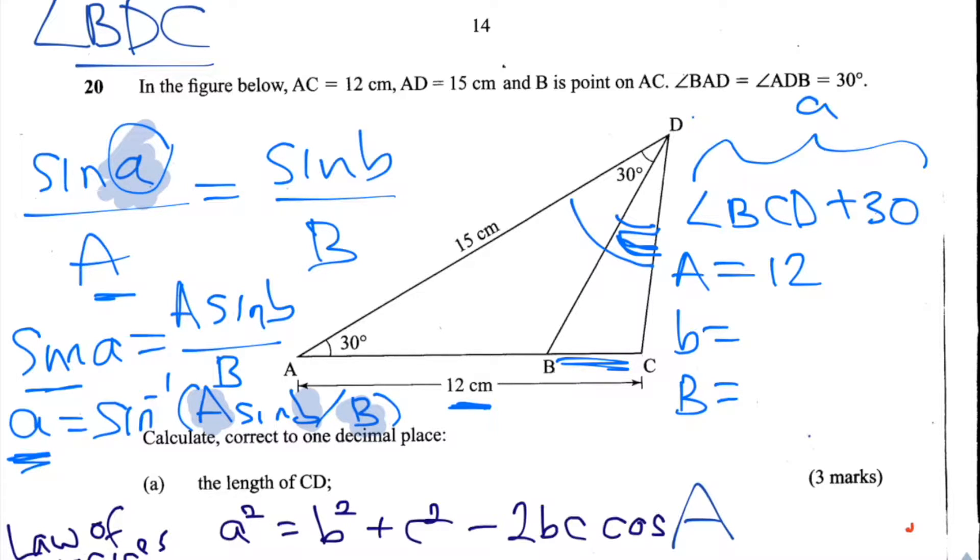Now we just need to find values for little b and big B. So which angle could we use? Well, we know this angle here, CAD. So we could definitely use CAD as our small b. CAD is 30 degrees.